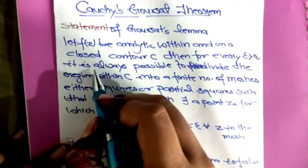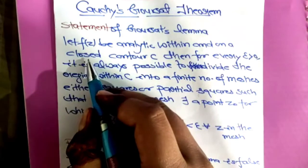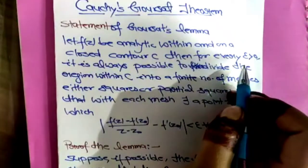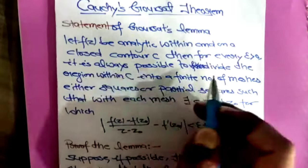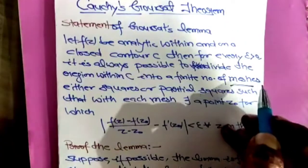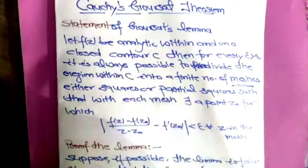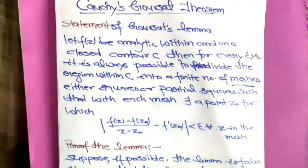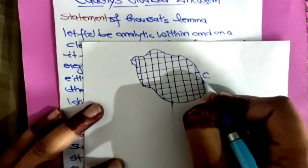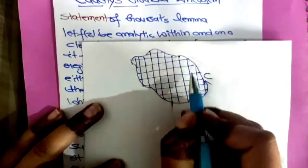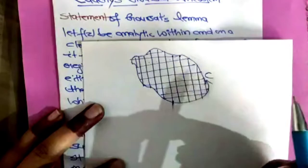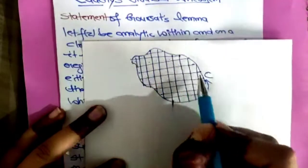The statement is saying: let f(z) be any function which is analytic within and on a closed contour C, for every epsilon greater than 0. It is possible to divide the region within C into a finite number of meshes. What is the meaning of meshes? Basically, this word means like a net — you have to divide the region into very fine sections. If we take any region or contour C, this whole region R can be divided into meshes. Every such section is called a mesh.